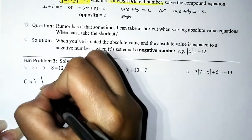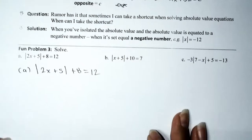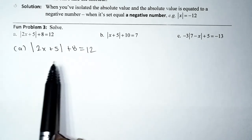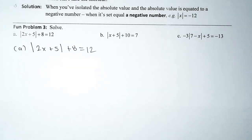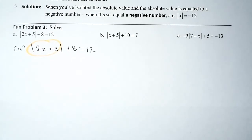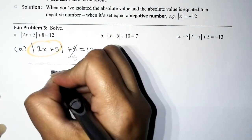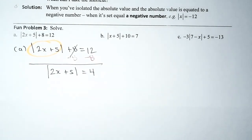We have three problems to work through. Problem A: absolute value of 2x plus 5, plus 8 equals 12. First, identify the type — we have an equation with an absolute value and a variable inside, so it's an absolute value equation. Our first goal is to isolate the absolute value. To undo the addition of 8, subtract 8 from both sides, giving us absolute value of 2x plus 5 equals 4.